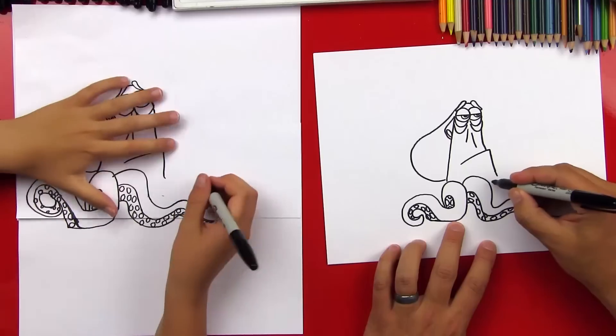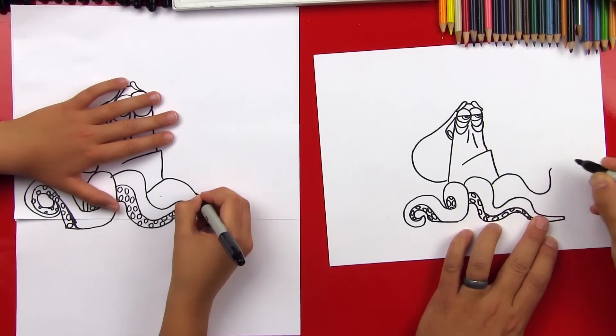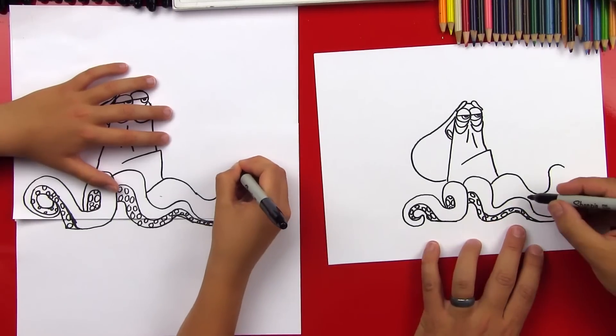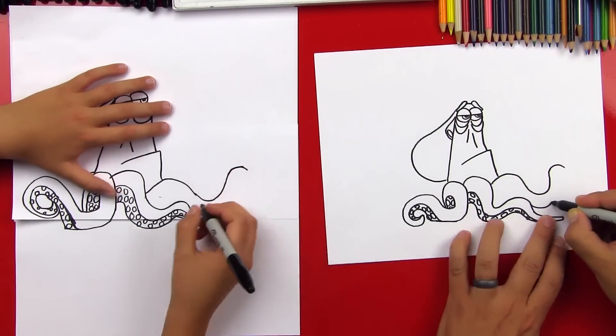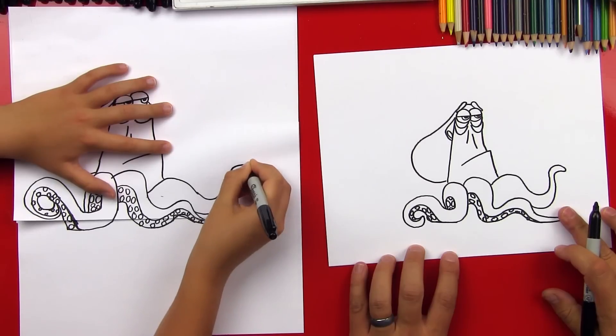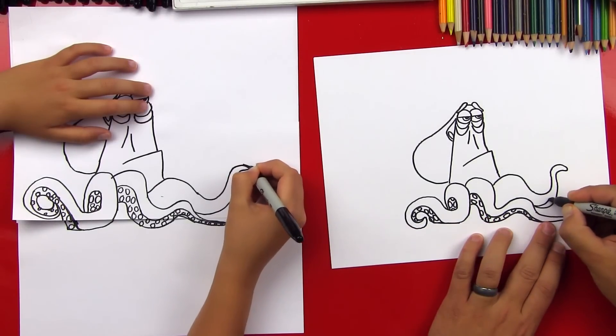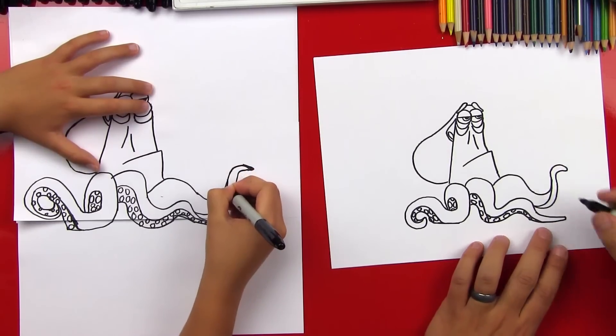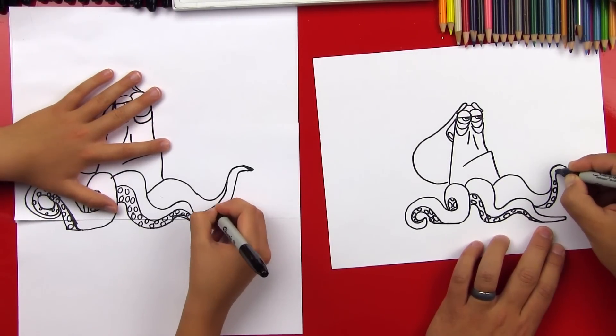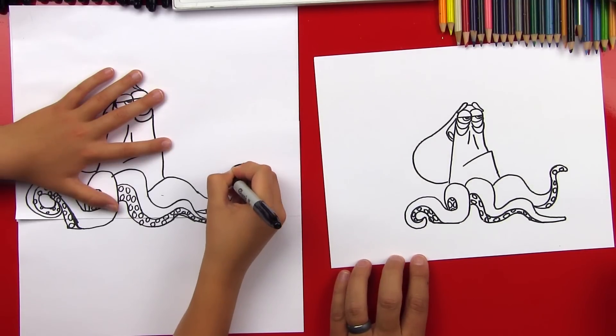Now let's add another leg, we'll do another U shape. And then this one's going to come up like that, so it makes a regular U, and then it's going to curl right at the end. Okay, now let's come back here and we'll do the other side of his leg. And then it tapers, so it gets thinner as it gets to the end. Now we're going to divide just the end of this leg. So I'm just going to come up like that. And then we'll put more suction cups on this side.